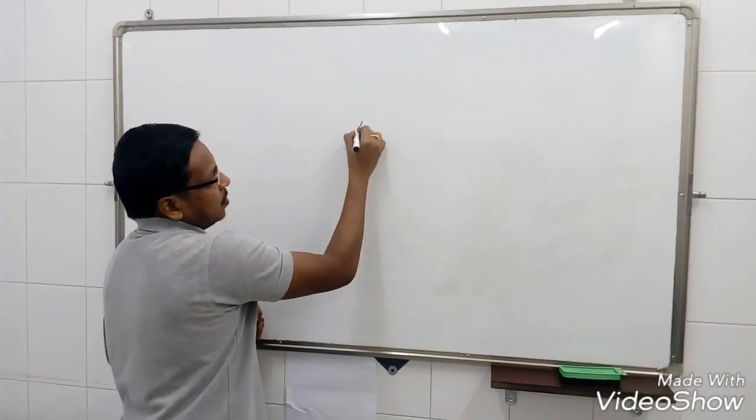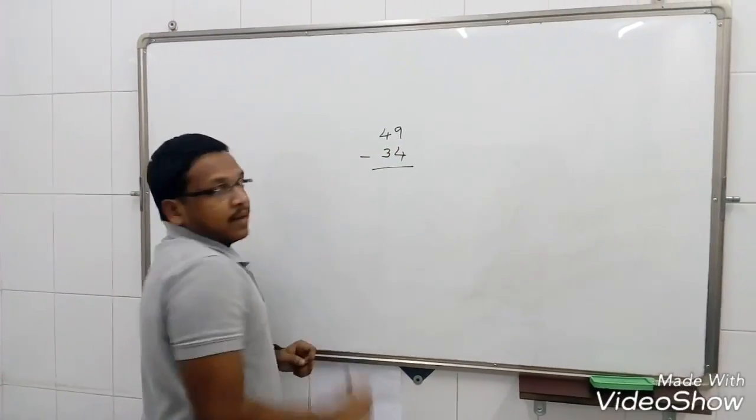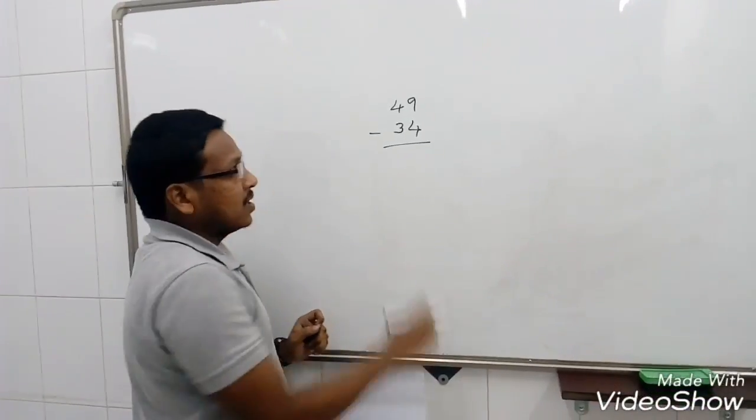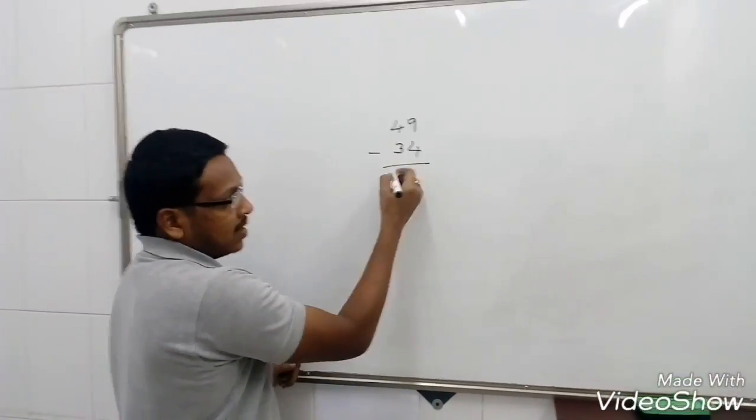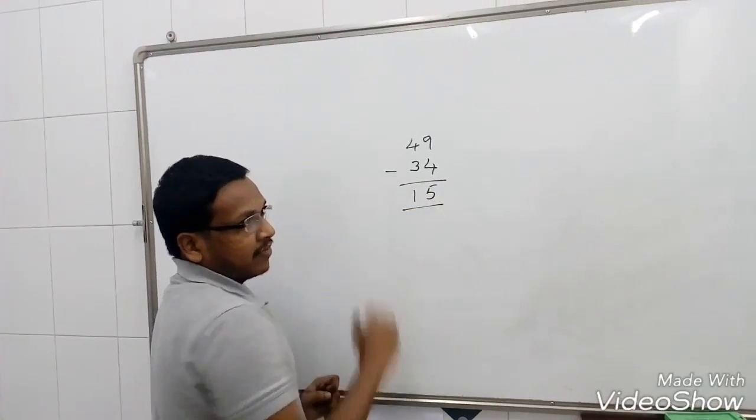So, suppose a number is 49 minus 34. Here also we will start from this side to this side in the difference of all the methods. 4 minus 3 is 1, I can write directly. 9 minus 4 is 5, I can write directly 15.